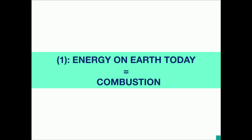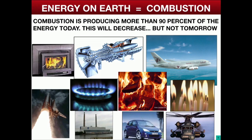The first equation of today is that energy today on Earth is equal to combustion. More than 90% of energy on Earth is produced by burning something. It can be wood to heat up something, and it's done by 1.5 billion people on Earth, knowing that 1.5 million of these people are going to die of that, because they don't know that burning wood is dangerous.